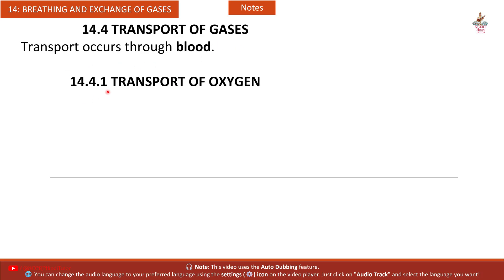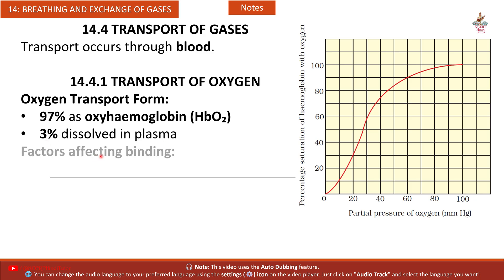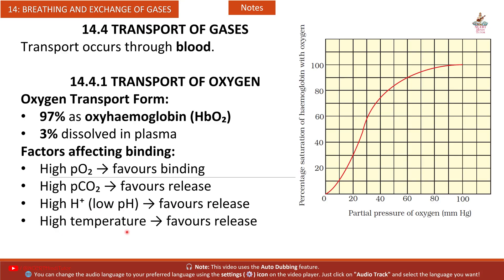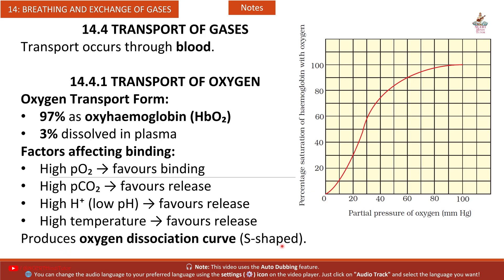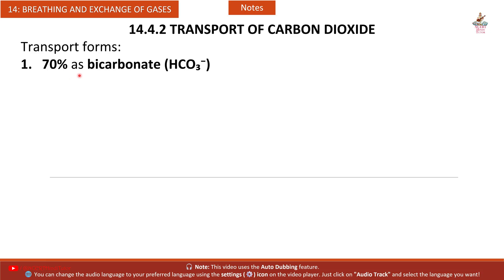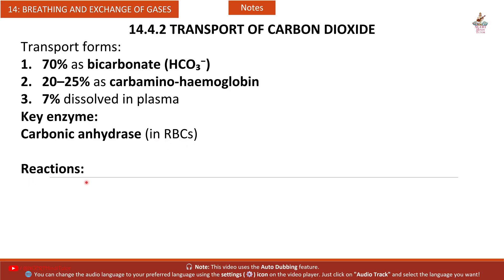Section 14.4 — Transport of Gases. Oxygen transport: 97% as oxyhaemoglobin (HbO2), 3% dissolved in plasma. Factors affecting binding: high pO2 favours binding; high pCO2, high H+ (low pH), and high temperature all favour release. This produces the S-shaped oxygen dissociation curve. CO2 transport forms: 70% as bicarbonate (HCO3−), 20–25% as carbaminohaemoglobin, 7% dissolved in plasma.